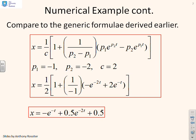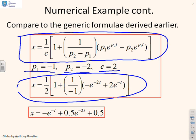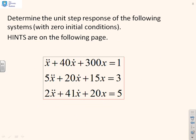Let's compare it with this generic formula we had. We said you could write x equals 1/c times [1 plus 1/(p₂ minus p₁) times (p₁e^(p₂t) minus p₂e^(p₁t))]. If I substitute in the values I had—p₁ is minus 1, p₂ is minus 2, little c equals 2—I get x equals 1/2 times [1 plus 1/(minus 1) times (minus e^(-2t) plus 2e^(-t))]. And I simplify that out. What do you notice? The same solution that we just had before.